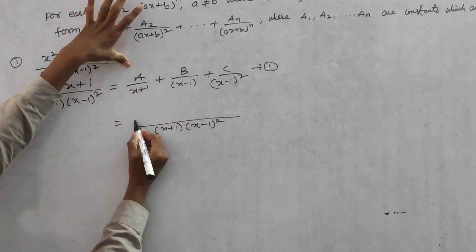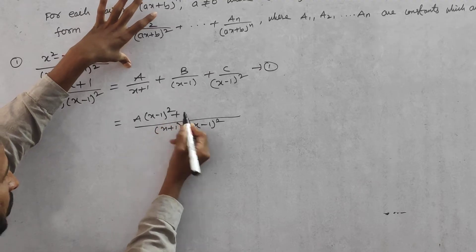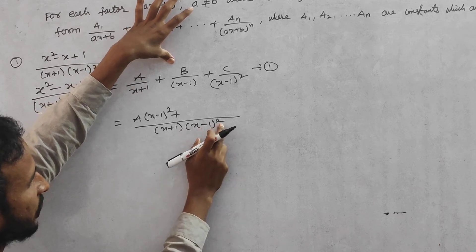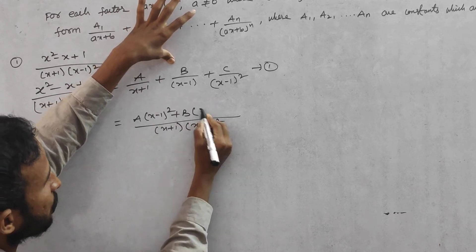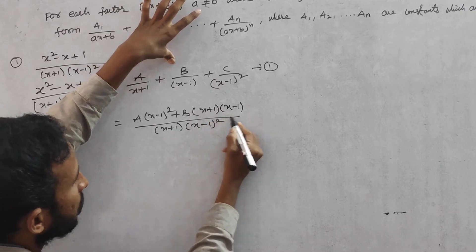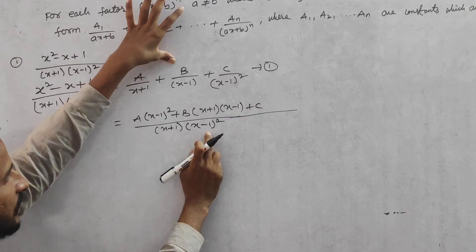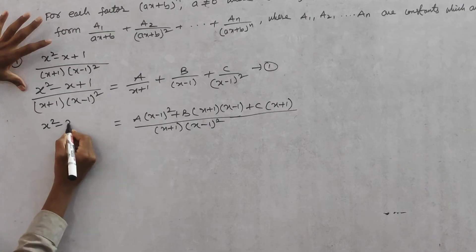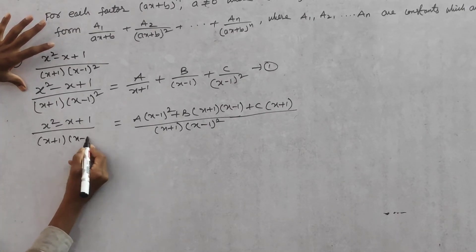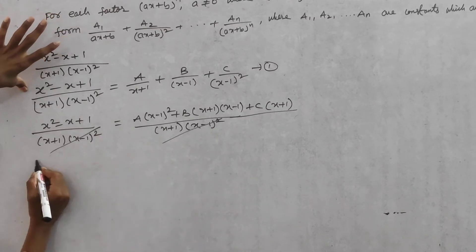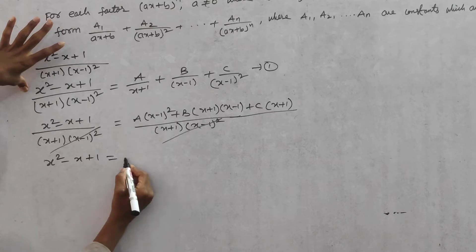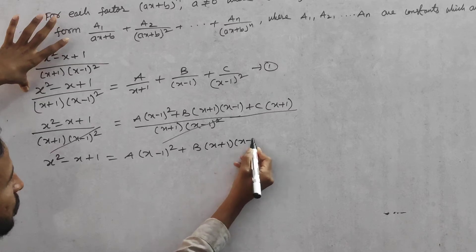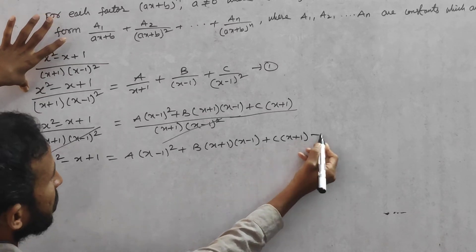Multiplying through by the LCM: for A/(x+1), the missing factor is (x-1)², so we get A(x-1)². For B/(x-1), the missing factors are (x+1) and one (x-1), giving B(x+1)(x-1). For C/(x-1)², the missing factor is (x+1), giving C(x+1). So equation 2 is: x² - x + 1 = A(x-1)² + B(x+1)(x-1) + C(x+1).